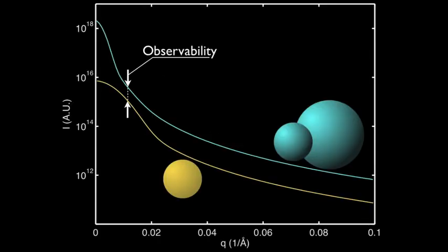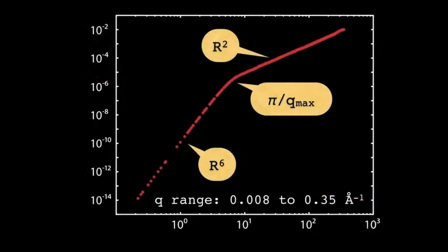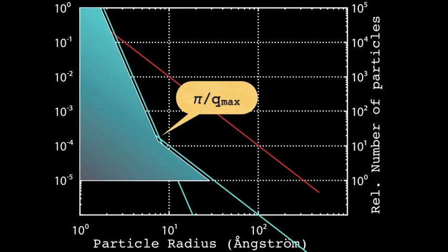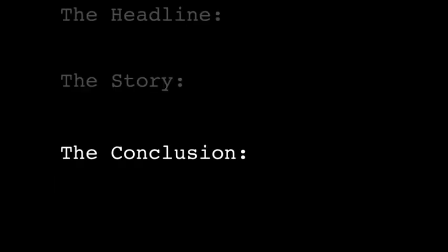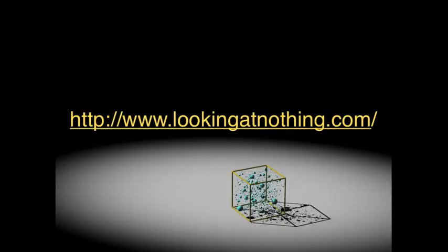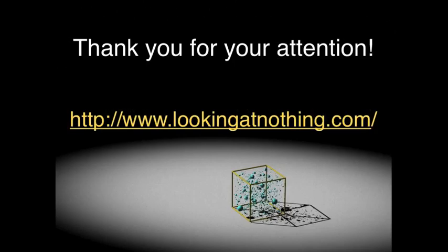To conclude: we can define observability as the maximum fractional contribution of a single particle scattering function to the total scattering function. This follows a radius squared relationship up until the pi over q_max point, beyond which we see radius to the sixth power behavior. We can translate this into the relative number of particles required to see any effect on the scattering pattern. If you'd like to learn more, please take a look at my website — thank you very much for your attention.